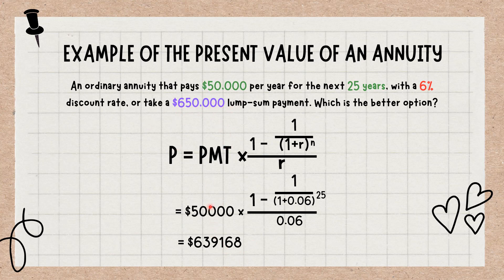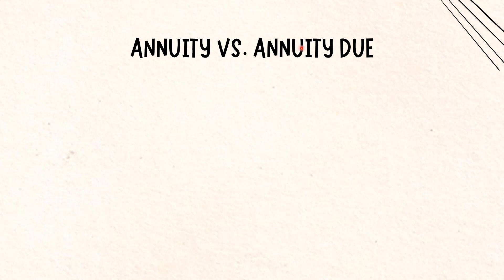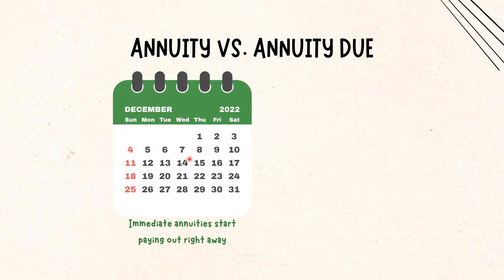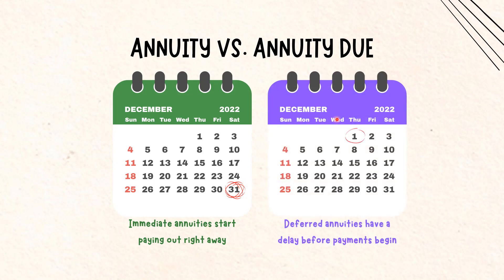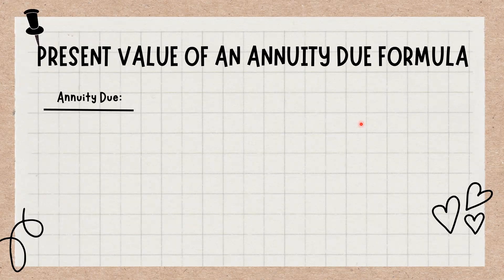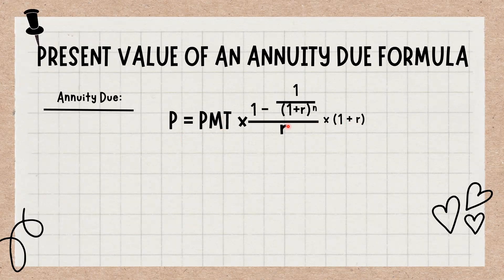An ordinary annuity makes payments at the end of each time period, while an annuity due makes payments at the beginning. All else being equal, the annuity due will be worth more in the present. Since payments are made at the beginning of each period, the formula is slightly different. To find the value of an annuity due, simply multiply the ordinary annuity formula by a factor of 1 plus R.